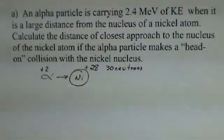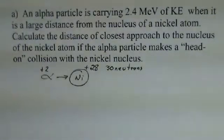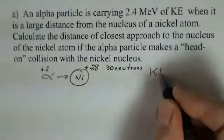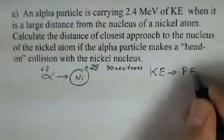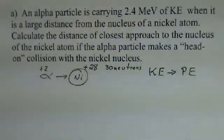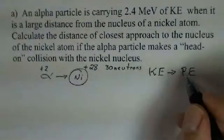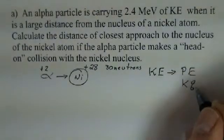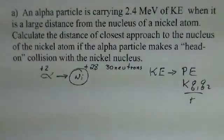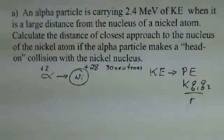So why would there be a limit on how close the alpha particle can come to the nickel nucleus? We're going to have a repelling force, and what's going to happen is that the kinetic energy we start with will all be transferred into potential energy. The potential energy is K Q1 Q2 over R — not R squared, that would be the force. It's just divided by R.